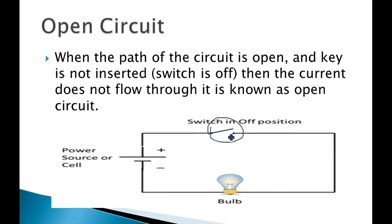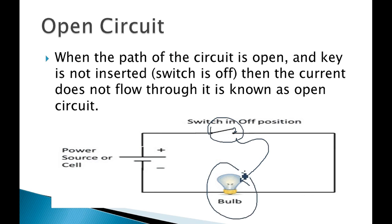When the current path is not connected — the key junction is open — current does not flow here. If current does not flow, the bulb will not glow. So when the path of the circuit is open and the key is not inserted, current does not flow, and it is known as an open circuit.